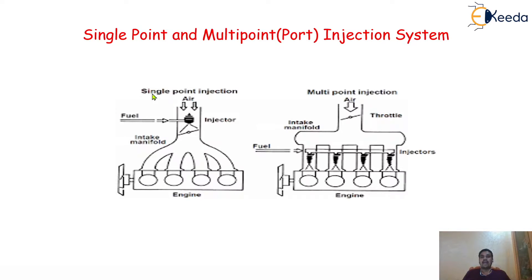In the left diagram this is the single point injection, and the right side diagram is about multi-point injection or port injection system. Consider a four-cylinder engine with four manifolds — first, second, third, and fourth. In single point injection, there is only a single injector connected inside the manifold system, through which the amount of fuel sprays inside the inlet manifold and is then distributed to each engine cylinder as per the firing order.